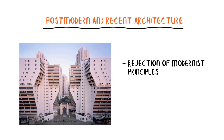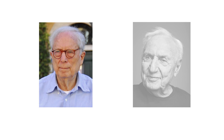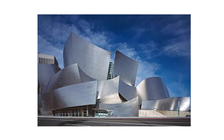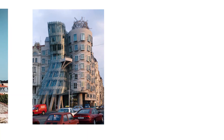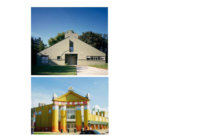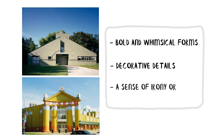Postmodern and recent architecture is characterized by a rejection of modernist principles and a focus on eclecticism, fragmentation, and historical references. Architects like Robert Venturi and Frank Gehry embraced diversity of styles and playfully incorporated elements from different architectural traditions into their designs. Postmodern architecture often features bold and whimsical forms, decorative details, and a sense of irony or self-awareness.